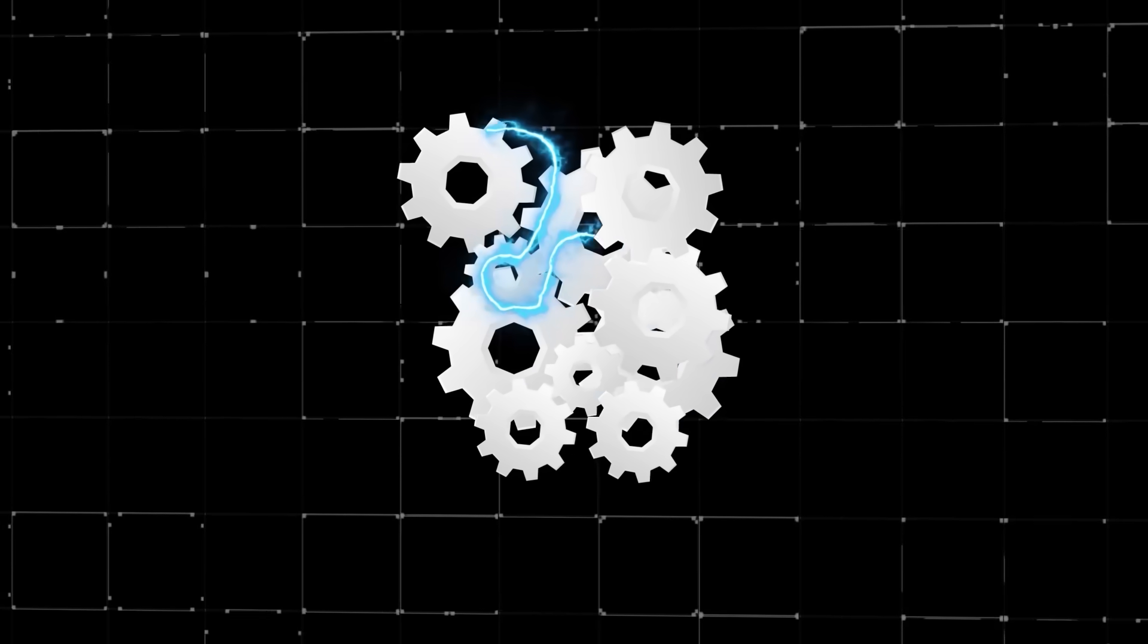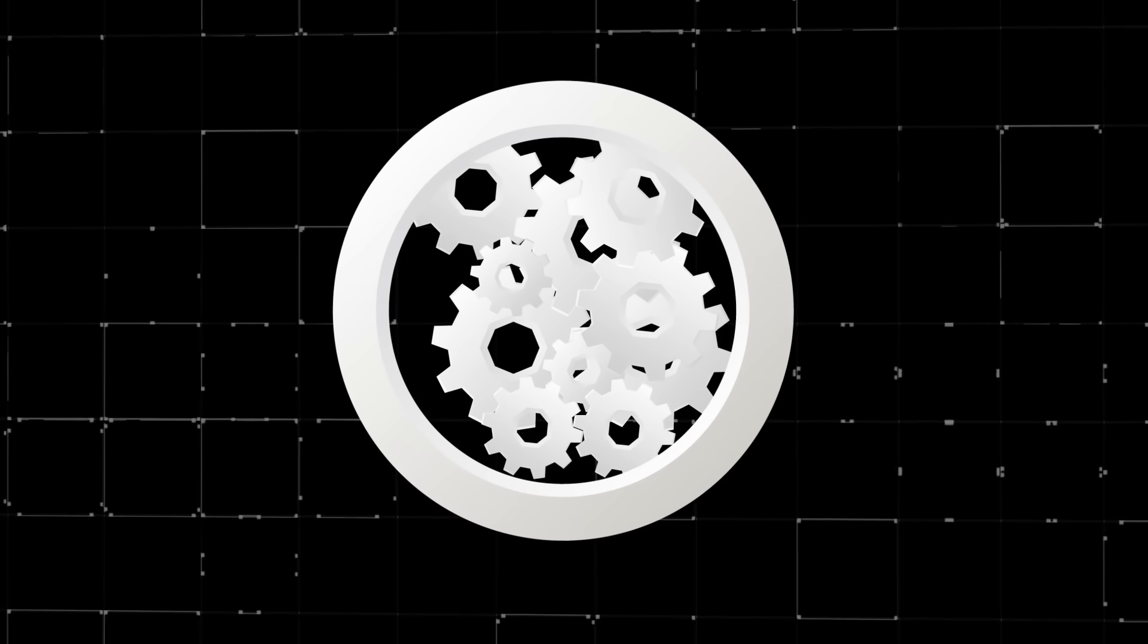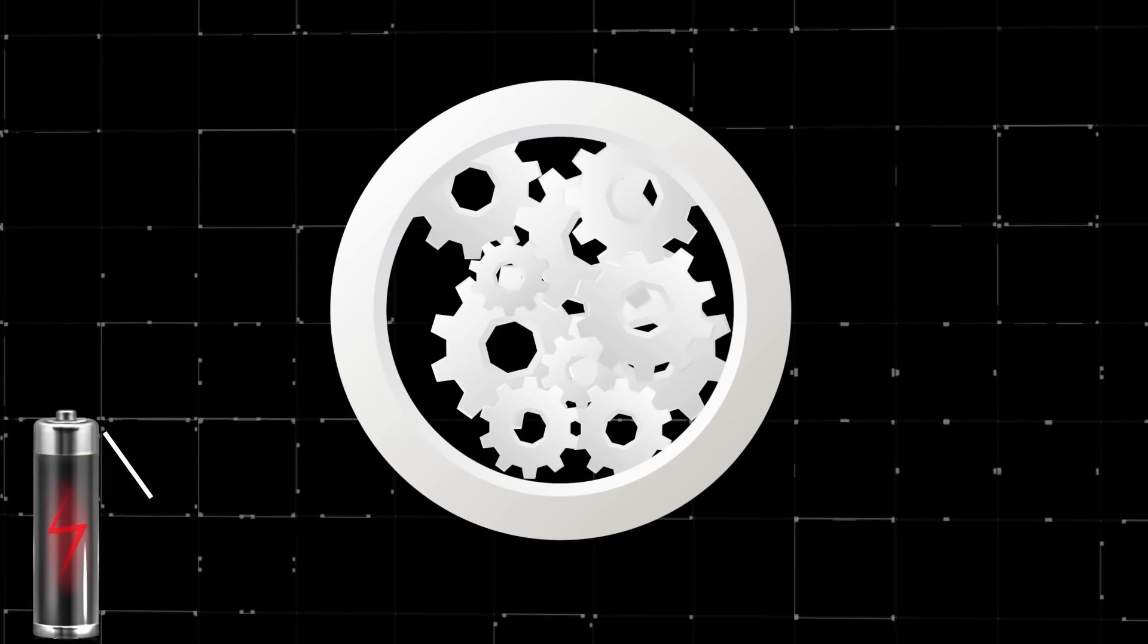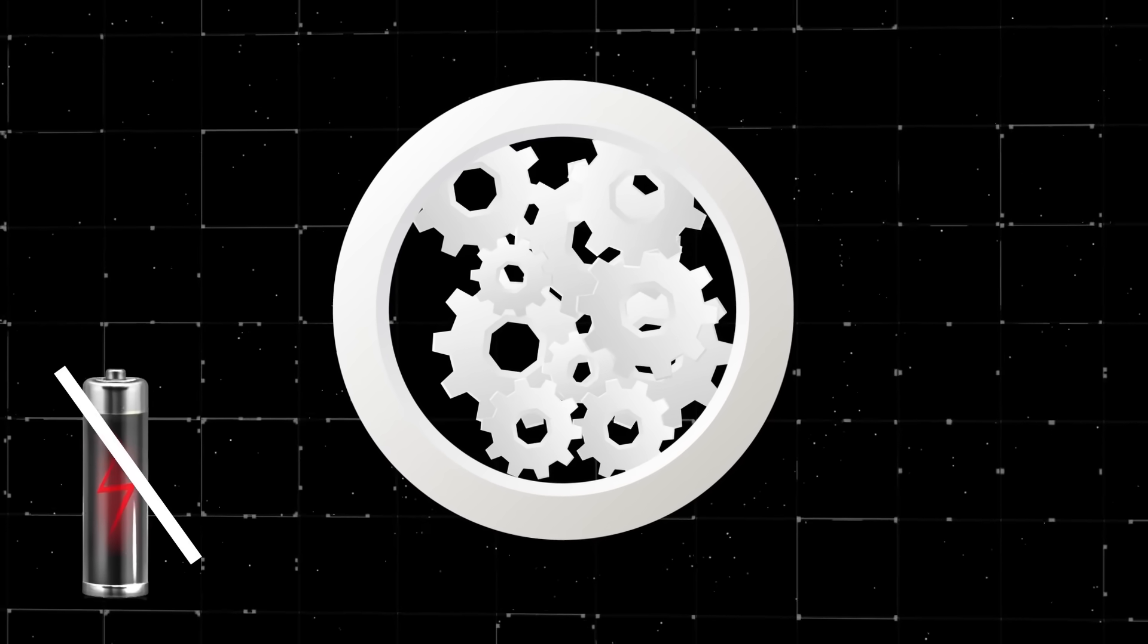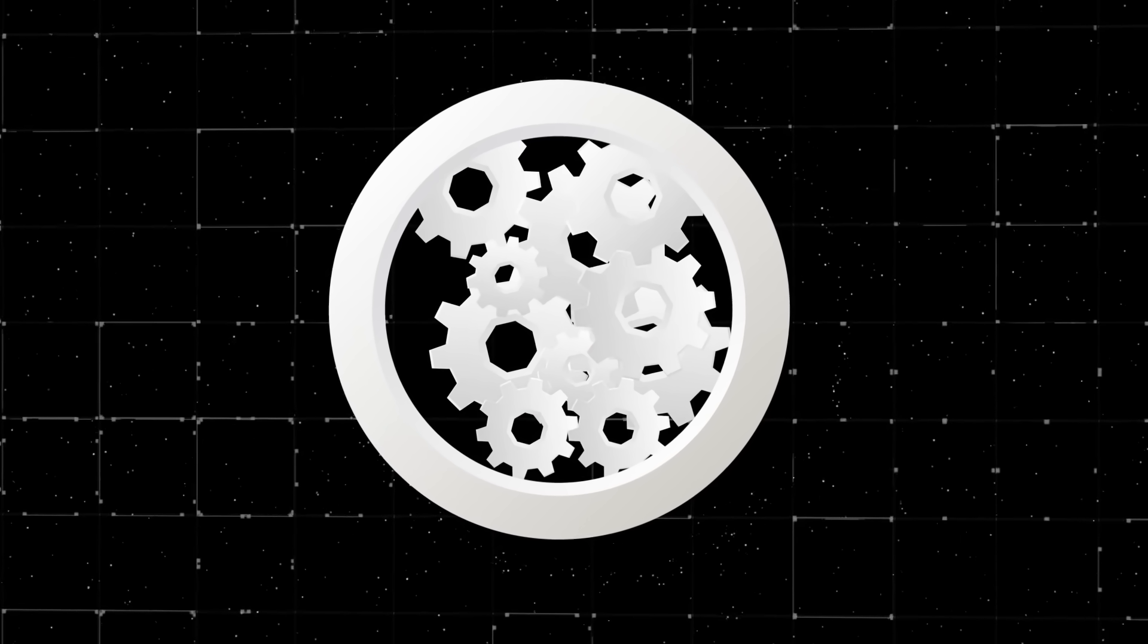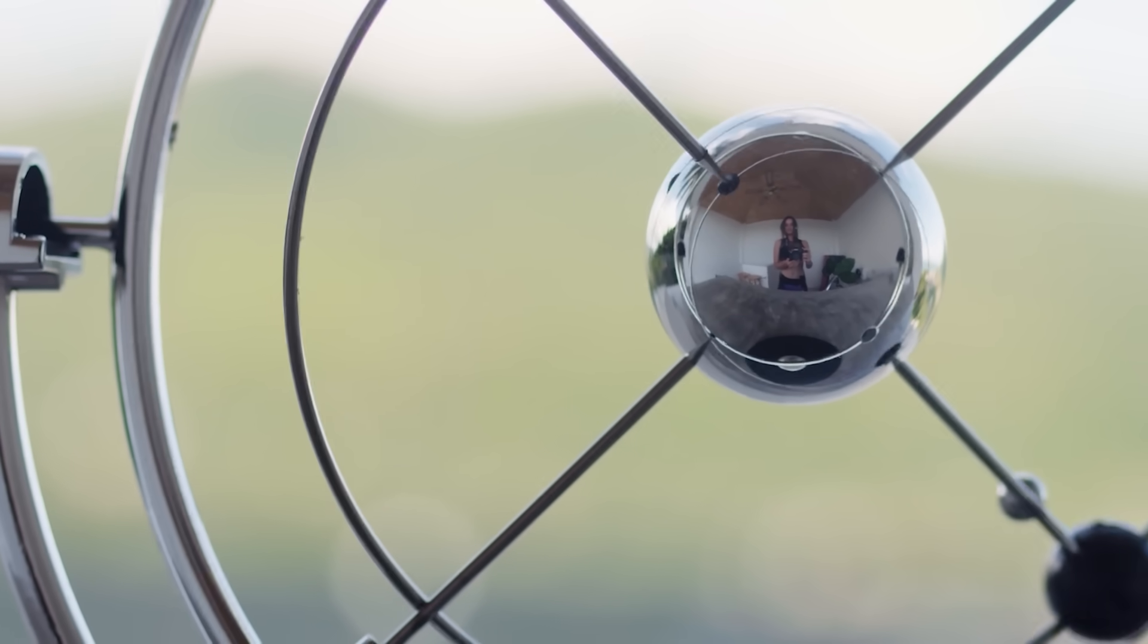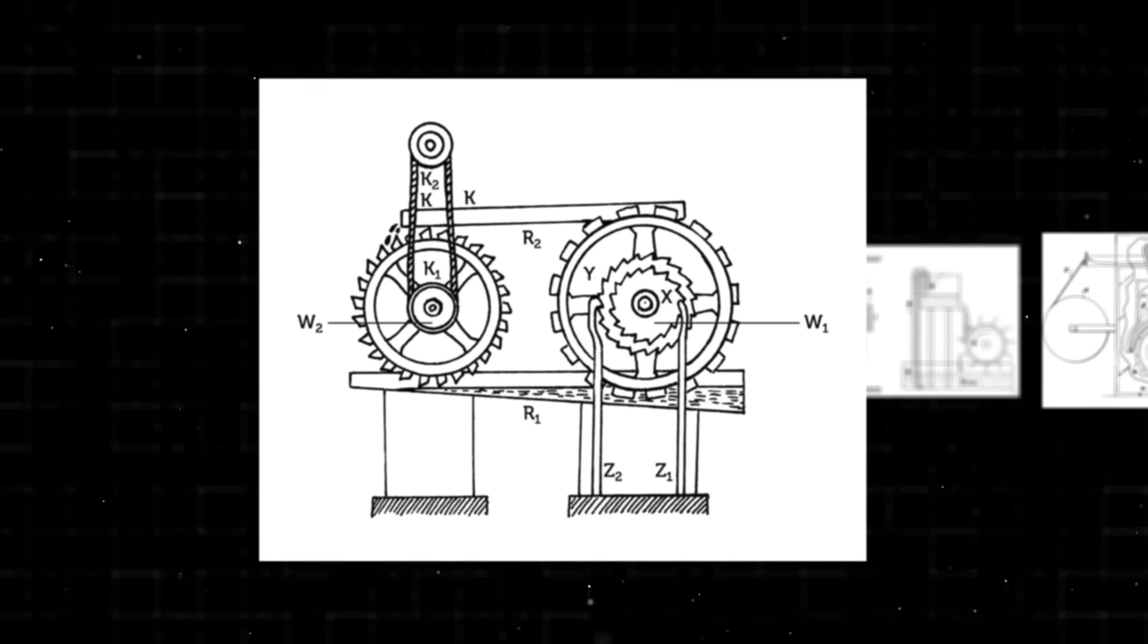For a true perpetual motion machine to exist, the energy would have to stay within the machine, or be a closed device that works entirely without any friction, any external source, and it would have to exist in a vacuum so there would be no atmospheric pressure on any moving parts. It sounds impossible, that's because it is.